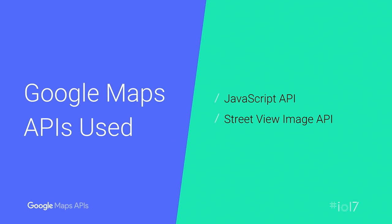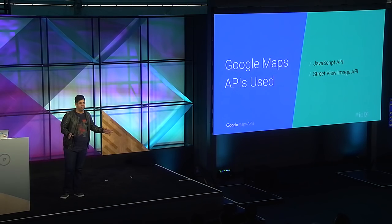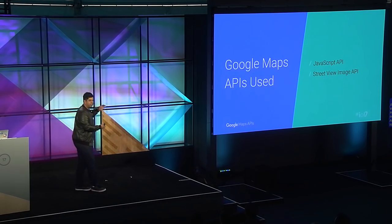In this simple store locator, we use the JavaScript API and the Street View Image API. The cool thing is we didn't need a server-side back end to power this, and this approach fits really well for many store locator scenarios.